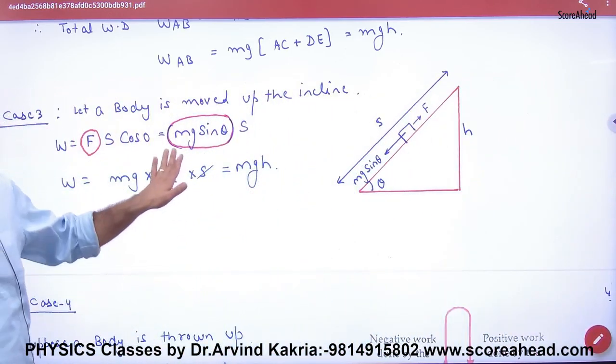Case number one: we will go straight from B to A. If we go directly from A to B, the displacement is upward, height H. The angle between force and displacement is 0 degrees, so the work done is MGH. Everyone knows that when an object goes from A to B, the work done is MGH.